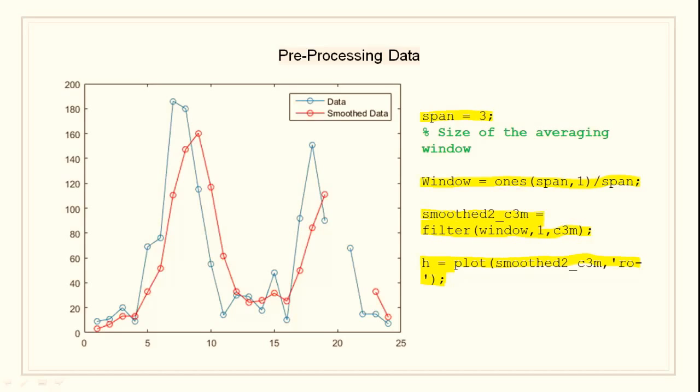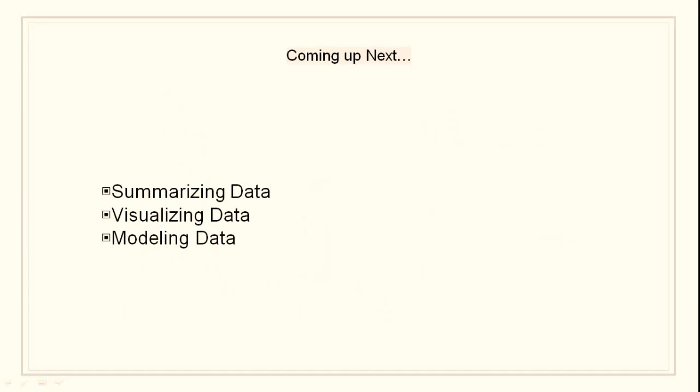Smoothing estimates the center of distribution of response values at each value of the predictor. It invalidates a basic assumption of many fitting algorithms, namely that the errors at each of the value predictors are independent. Accordingly, you can use smooth data to identify a model but avoid using smooth data to fit a model. This concludes our video on preprocessing data.